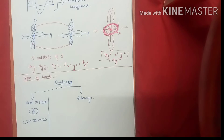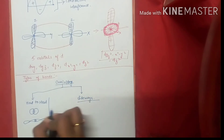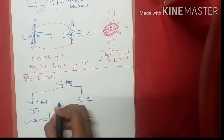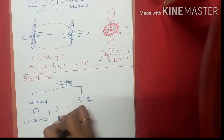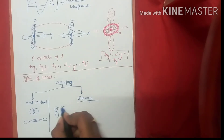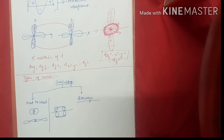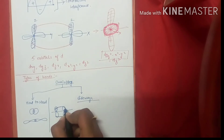Next is sideways overlapping. In sideways overlapping, a Pi bond can be formed, your Delta bond can be formed, and your Phi bond can be formed. Delta and Phi bonds are very important for those studying for NET and GATE exams. For sideways overlapping, if these are two p orbitals, they undergo sideways overlapping and lead to the formation of a Pi bond.